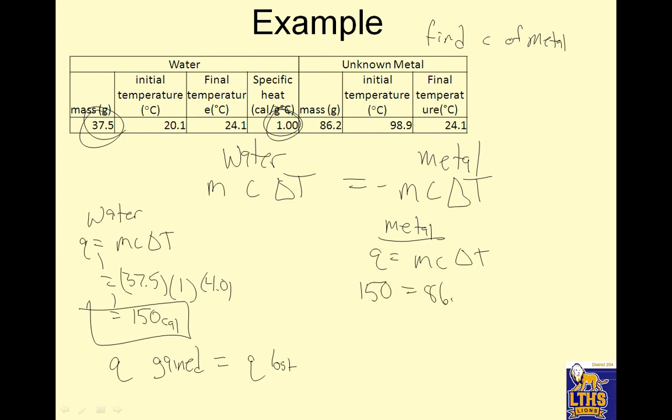And my change in temperature is 98.9 and 24.1. 98.9 minus 24.1. That's 74.8. For some reason, I put 0.1. And I'm going to solve for C. C equals, I'm just cross-multiplying everything here. So 150 over, move that guy down, 86.2. Move that guy down, 74.8.